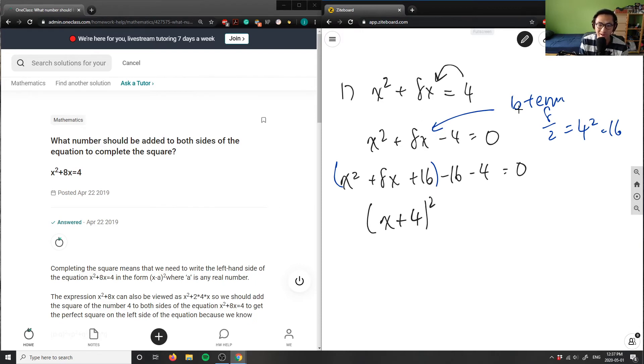(x + 4)² would be x² + 8x + 16, and then -16 - 4 would be -20. So this equals zero, and I bring the 20 to the other side.